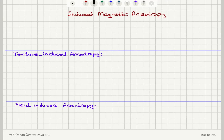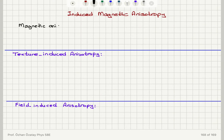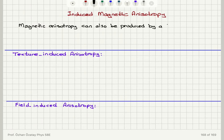We will now list some methods of inducing magnetic anisotropy other than magnetocrystalline anisotropy. Magnetic anisotropy can be produced by treatments such as annealing in fields. We will talk about what options we have in order to induce magnetic anisotropy in magnetic thin films and bulk objects. Extrinsic anisotropy can also be produced by such treatments.